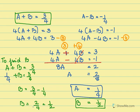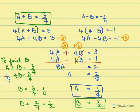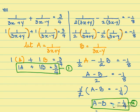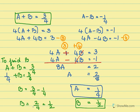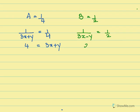Now let's go back and substitute the values of a and b. Recall that a equals 1 over 3x plus y, so 1 over 3x plus y equals 1 by 4. Cross multiplying gives 3x plus y equals 4. And b equals 1 over 3x minus y equals 1 by 2. Cross multiplying gives 3x minus y equals 2.